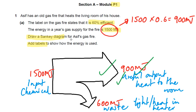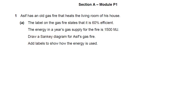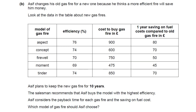That's the three-mark Sankey diagram question. Let's move on to Part B. Asif changes his old gas fire for a new one because he thinks a more efficient fire will save him money. Look at the data in the table about new gas fires. This question is all about handling that data. Asif plans to keep the new gas fire for 10 years — that's very important. The salesman recommends the model with the highest efficiency. Asif considers the payback time for each gas fire and the saving on fuel cost. Which model of gas fire should Asif choose?